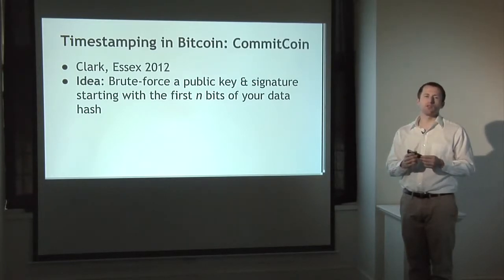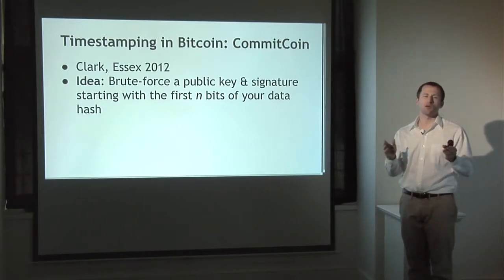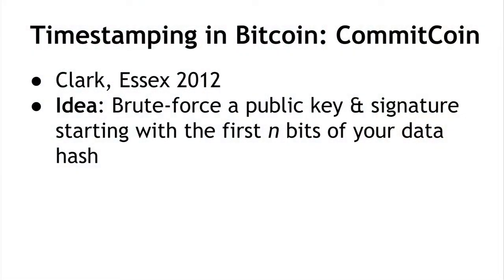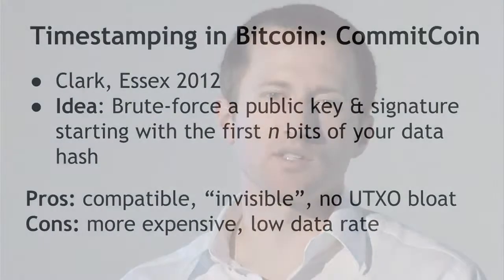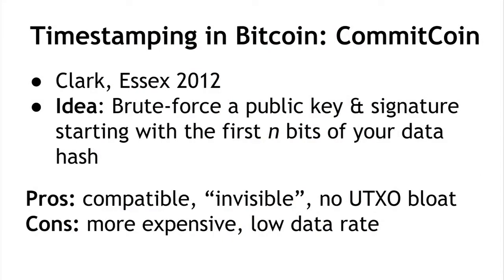A more sophisticated way is called CommitCoin — a protocol for finding public keys and signatures that have the data you want to commit to embedded in the bits of the public key and signature. You have to do some brute force work to find a special public key by trying many public keys and signatures so that the bits representing the hash of your data are also the bits of a valid public key. The advantage is it's still compatible and invisible to miners — it looks just like any other valid public key — and you aren't adding any new unspendable transaction outputs. The downside is it's more expensive to do and your data rate will be lower.